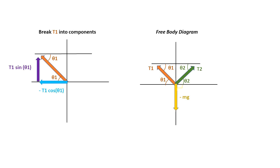Now I want to break the tension 1 into components. You can see that using the alternate interior angle of theta1, I can say that the y component of T1 is T1 sine of theta1 and the x component is negative T1 cosine of theta1.